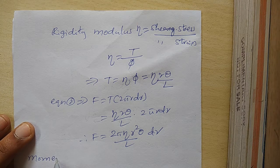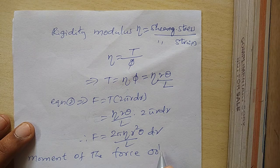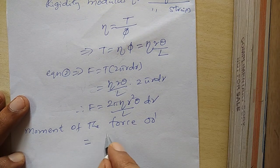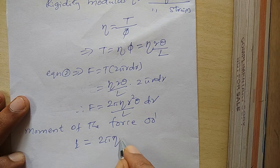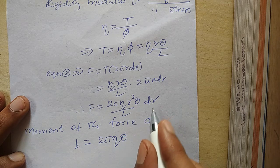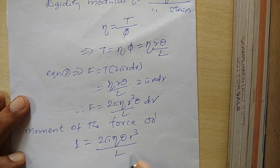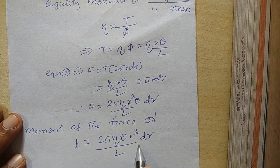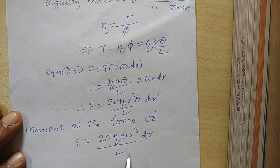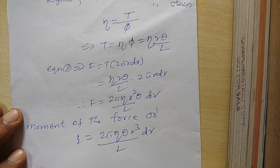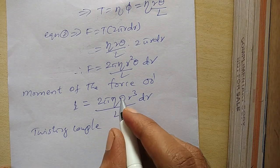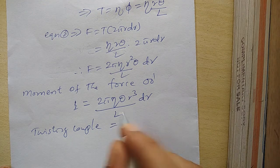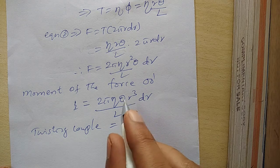The moment of this force about the axis O' equals force multiplied by the distance r, so moment = 2πηθ/L × r³ dr. This is the moment of force for one layer of the cylinder. For the entire cylinder, the twisting couple is obtained by integrating this expression.